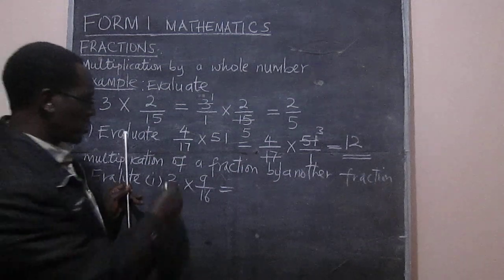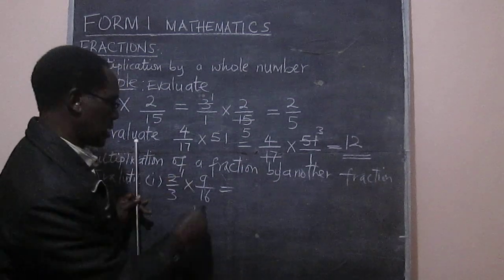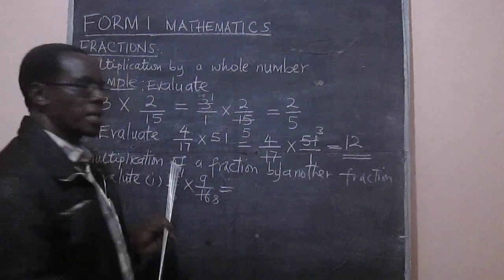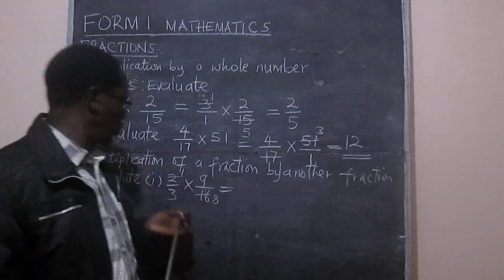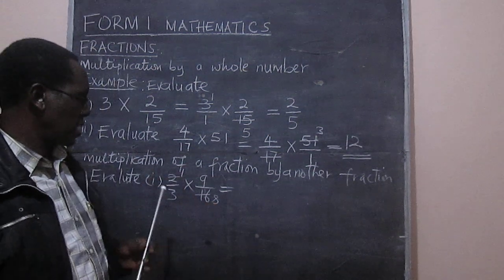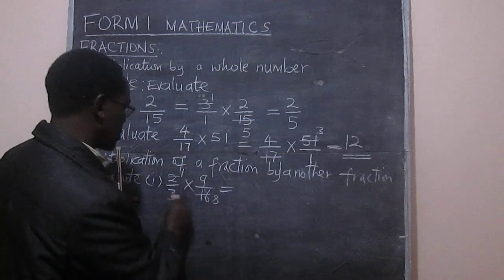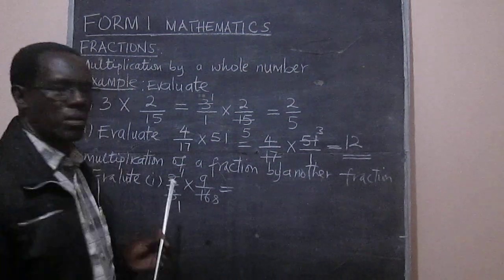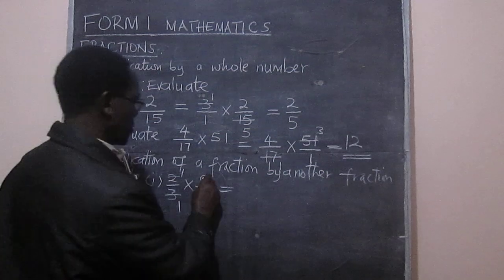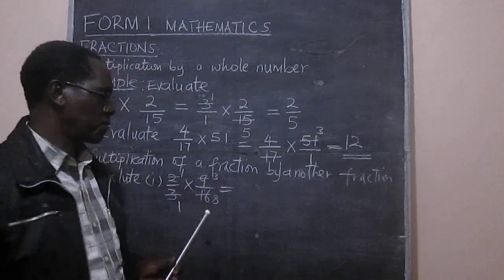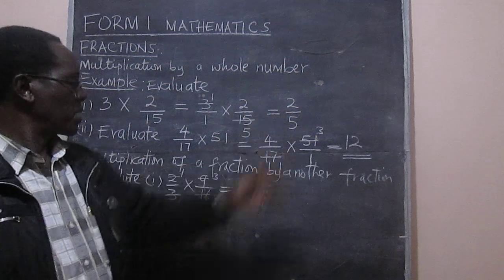So we look for the common factor again. And we can see that 2 can divide here once and here 8 times. You can divide by 2 to get 1 there and 8 there. We can also divide by 3 so that we have 1 there, and we divide by 3 and we get 3.